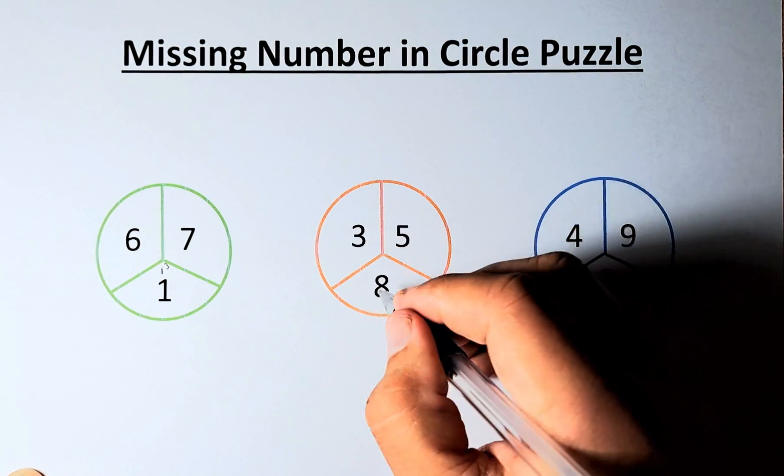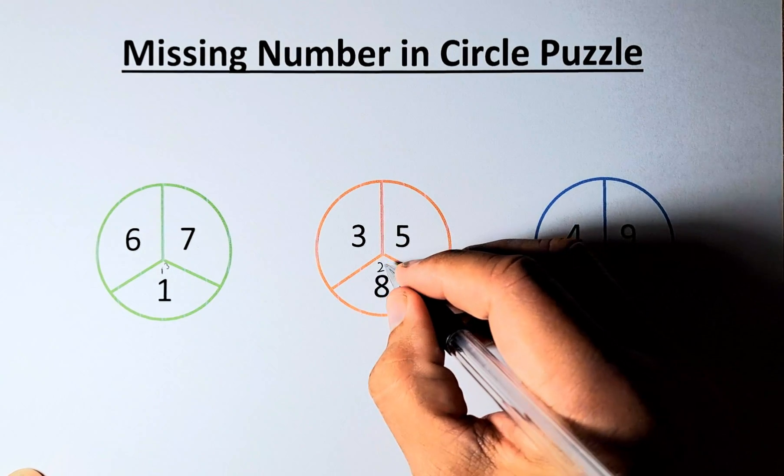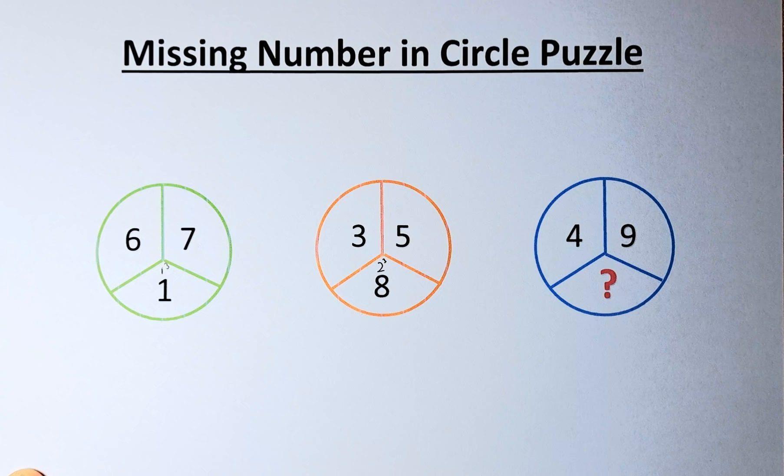Similarly, 5 and 3 and 8. So, 5 minus 3 is going to give you a 2. And then you are going to cube the answer. So, 2 cube will give you an 8.